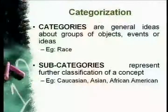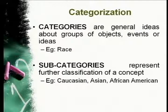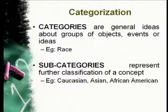Stereotypes have to do with categorization. Categories are general ideas about groups, objects, events, or ideas — and we'll use race as an example. Within a category you can have subcategories that represent further classification of a concept. I should say 'ethnic group' rather than race, because race refers to biology, while ethnic group refers to the entire cultural system that makes up a person. Within that category you have subcategories: Caucasian, Asian, African American, Latino, and so on.